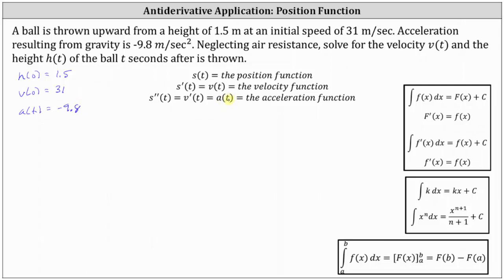Because the acceleration function is equal to the derivative of the velocity function, we can determine the velocity function by finding the antiderivative of the acceleration function. So v of t is equal to the indefinite integral of the acceleration function, which is negative 9.8 dt, which is equal to negative 9.8 t plus C.